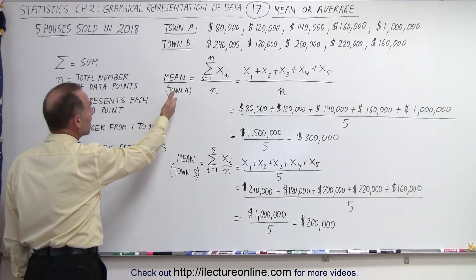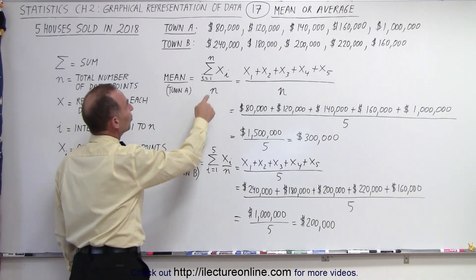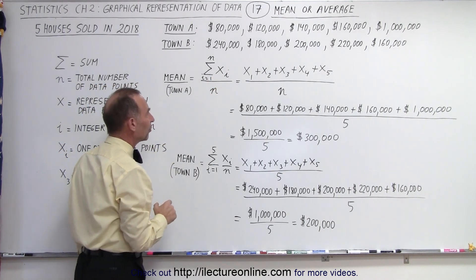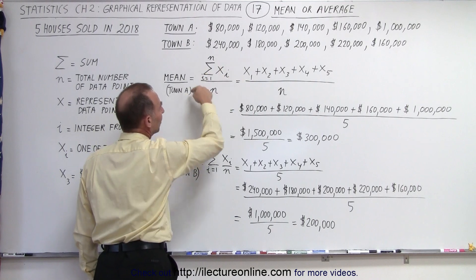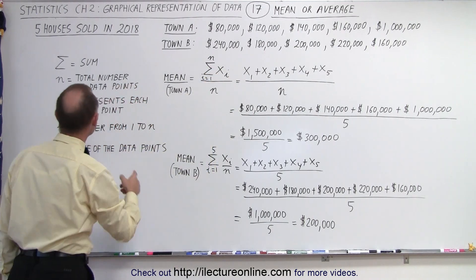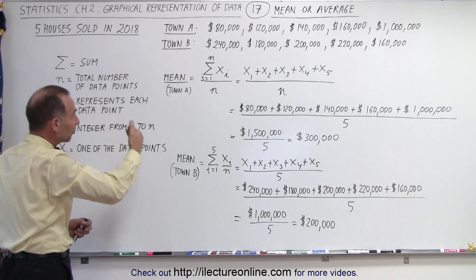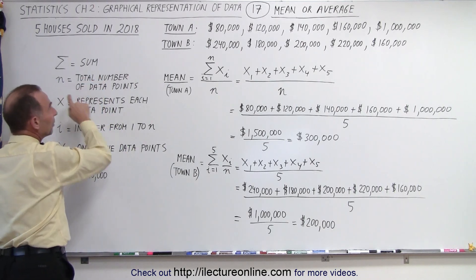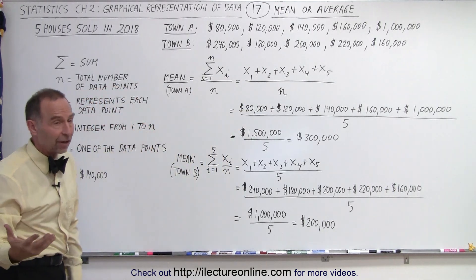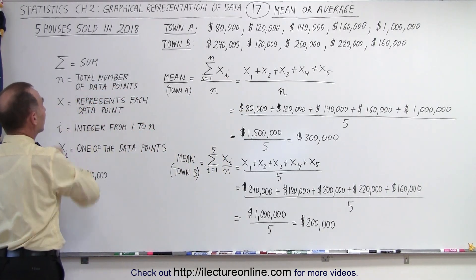Now to find the average or the mean, what do we do? We sum up all the values divided by the total number of values. This is the symbolism that we typically use. This symbol right here, the Greek letter sigma, means the sum. We're going to sum things up. N in this case represents the total number of data points. In this case there are five houses sold, so N would be equal to five.